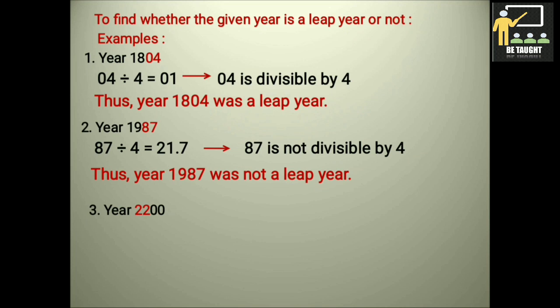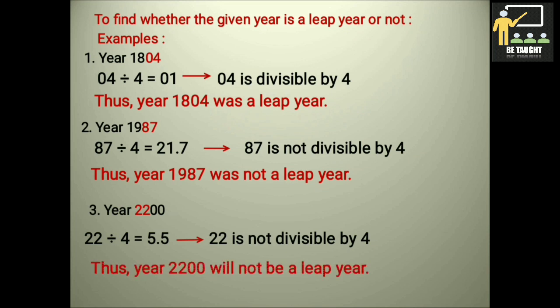Now let us see one more example. The year 2200, which is not yet come, which will be coming later on. So let us see. Now here it is a century year. Okay. So the last two digits are 0, so we won't take that. When it is a century year, we have to take the first two digits. So we will take 22, and we will divide it by 4. So we get 5.5. So 22 is not divisible by 4. Thus the year 2200 will not be a leap year.